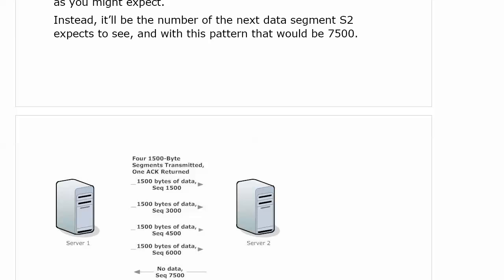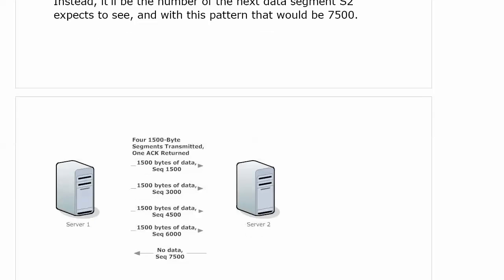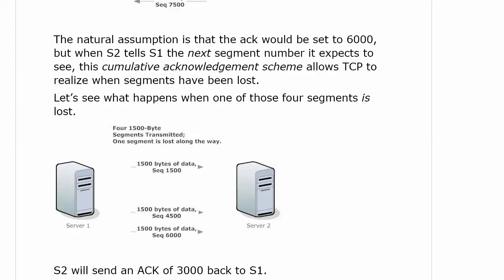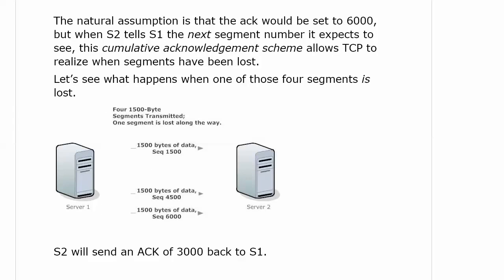That's the way the sequence number works. When it gets sent back, it's essentially saying: here's the next segment number I expect to see from you. The natural assumption is that the ACK would be set to 6,000 — the last one received — but when server 2 tells server 1 the next segment number it expects to see, we call this a cumulative acknowledgement scheme, and that allows TCP to realize when segments have been lost.